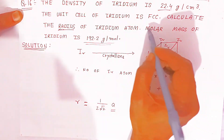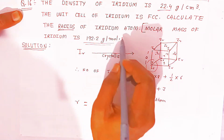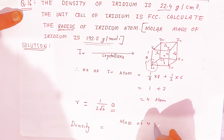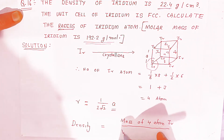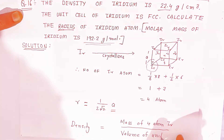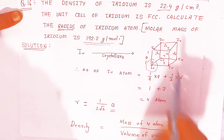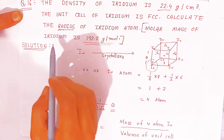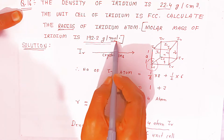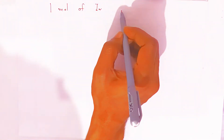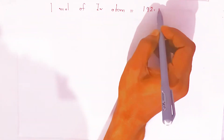Now, the molar mass of iridium is 192.2 gram per mole. Density is the mass of 4 iridium atoms in the FCC unit cell divided by the volume of the unit cell. To find the mass of 4 atoms, first calculate the mass of 1 atom. Since 1 mole of iridium = 192.2 gram, and 1 mole = 6.022 × 10²³ iridium atoms.